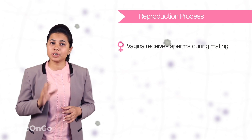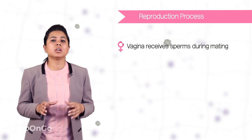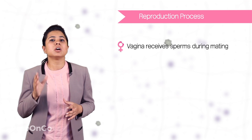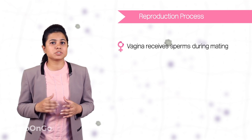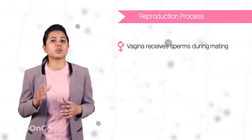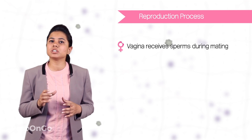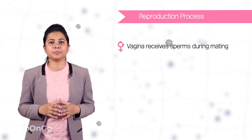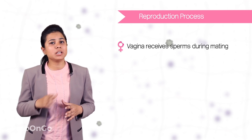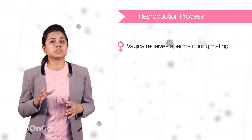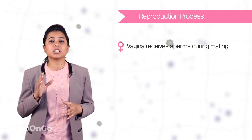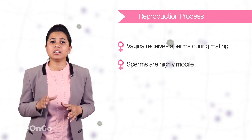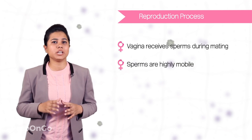In the first step of reproduction, the vagina from the female reproductive system receives the sperms from the male through the penis during the process of intercourse or mating. At a time, millions of sperms are released in the vagina which are highly mobile and move very fast.